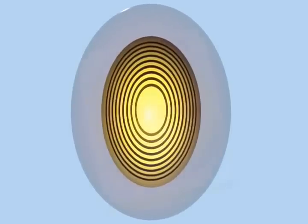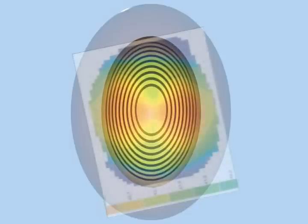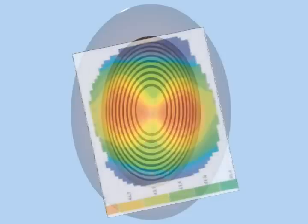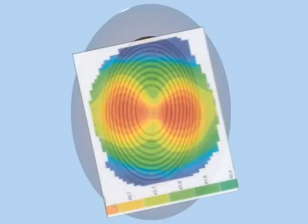The computer then converts the spacing of the rings into a color-coded map with hot colors for steep areas and cooler colors for flatter areas.